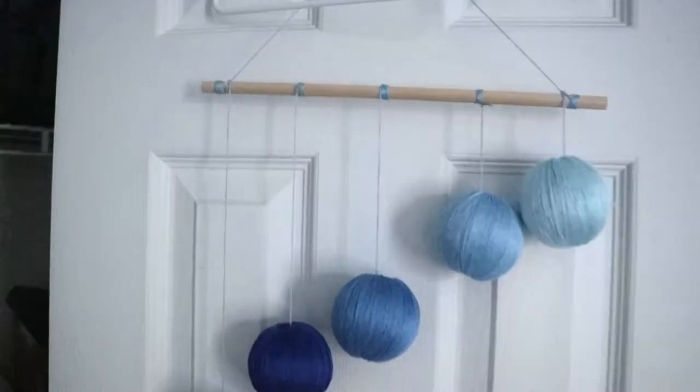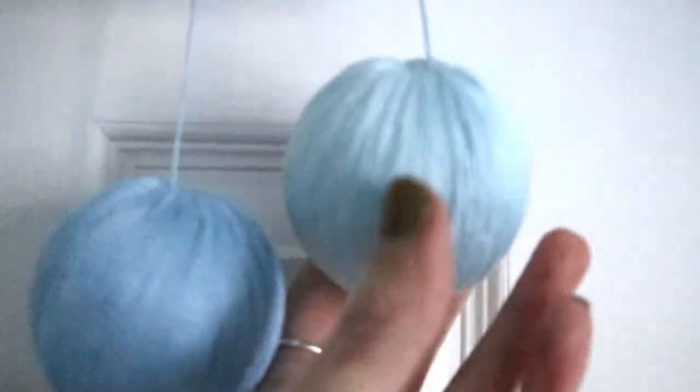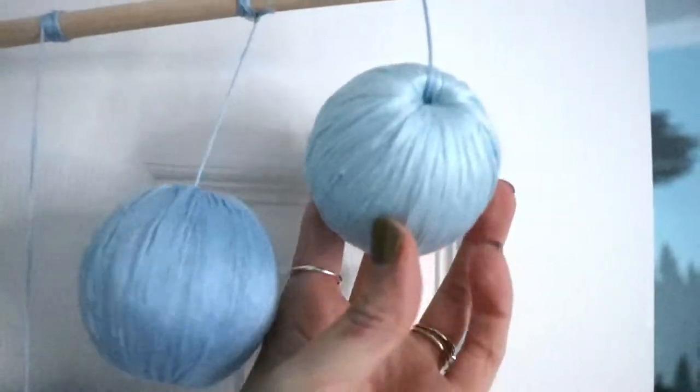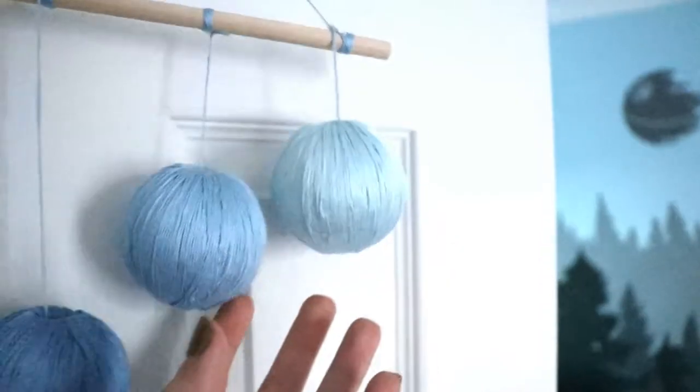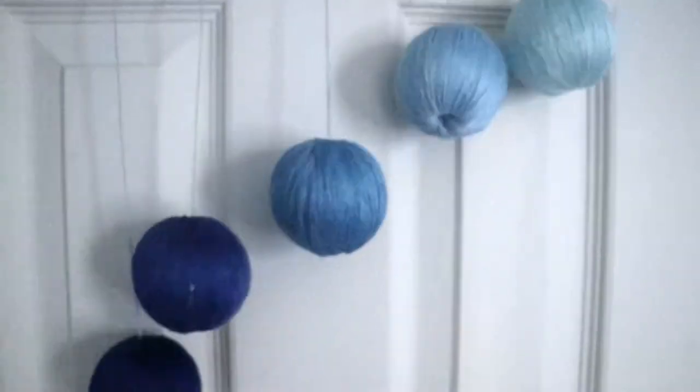Similarly, this is another DIY that we did. This is a Montessori mobile called the Gobi Mobile. And I made this from the Hapa family Montessori tutorial with just a wooden dowel, some embroidery thread, and some styrofoam balls.